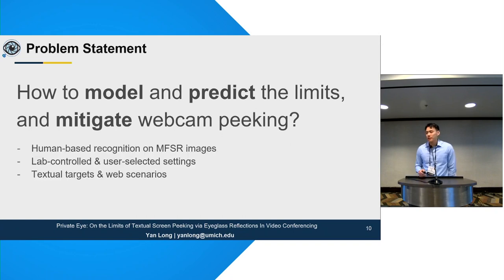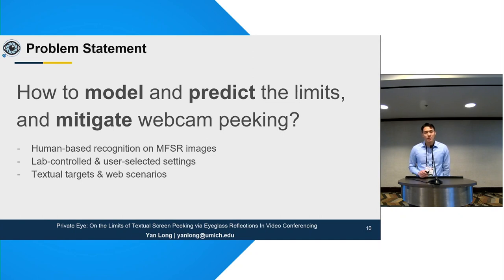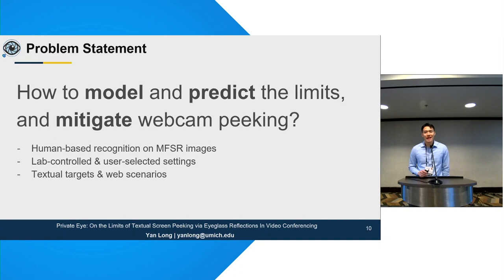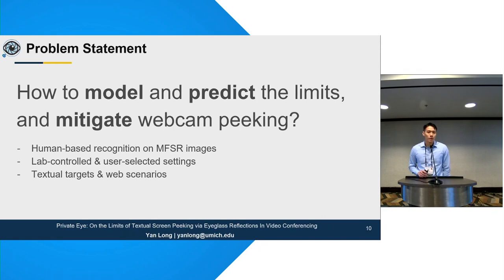Specifically, in this work we mainly used human-based recognition — such as Amazon MTurk workers — to recognize reflected texts, and we used existing multi-frame super resolution techniques to enhance reflection quality. We did experiments in both controlled lab settings and user-selected uncontrolled settings, focused mainly on textual targets in web scenarios, meaning text displayed on websites. We also did some work on directly recognizing the websites being browsed.